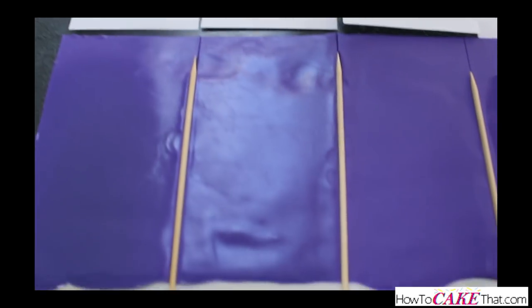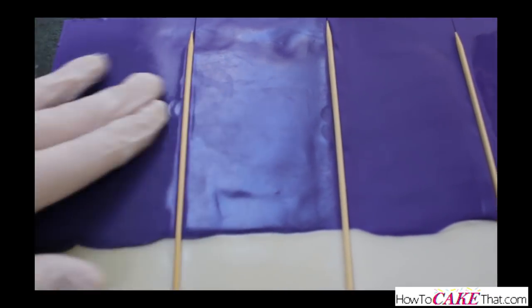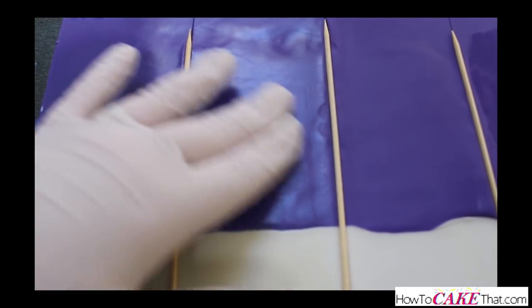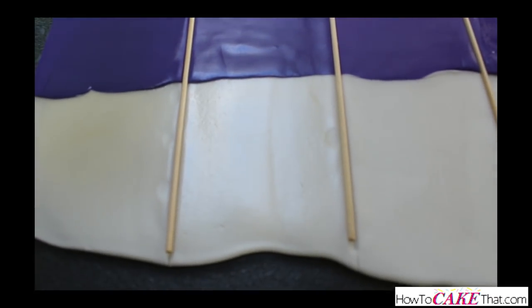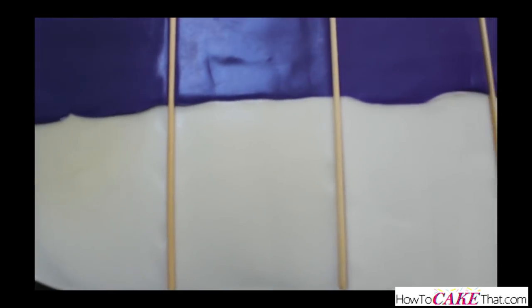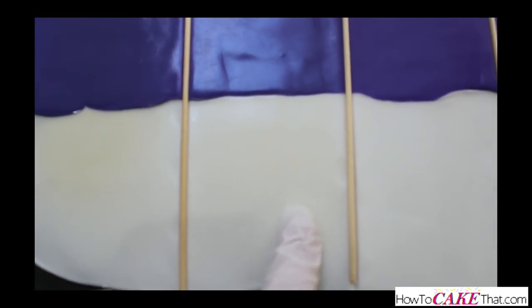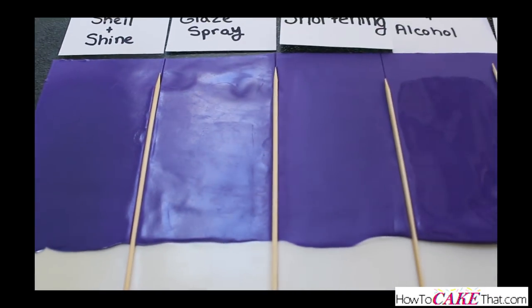PME glaze spray is also an excellent choice for long-lasting shine. It has the same smooth feel that the Shell and Shine does and it held up just as well as the Dinky Doodle spray. You can see here that both the Shell and Shine and the glaze spray yellowed the fondant, but overall I am extremely impressed with how well these products held their shine. They are definitely something I will use again many times in the future, I'm sure.